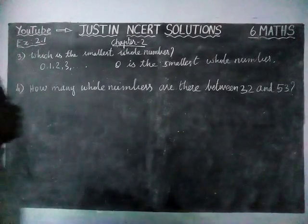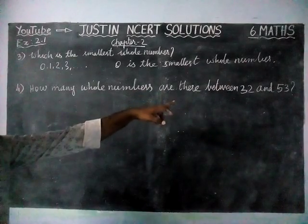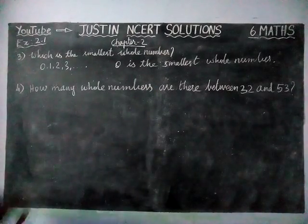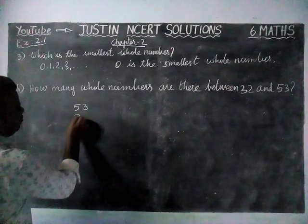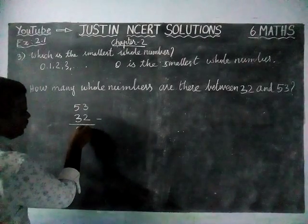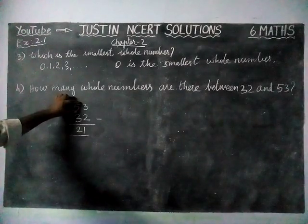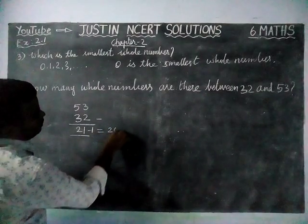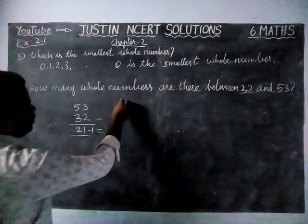Next, the fourth question: how many whole numbers are there between 32 and 53? We should not include 32 and 53. To find the count, we calculate 53 minus 32, which gives 21. But since we exclude both endpoints, we subtract 1 more: 21 minus 1 equals 20. Therefore, there are 20 whole numbers between 32 and 53.